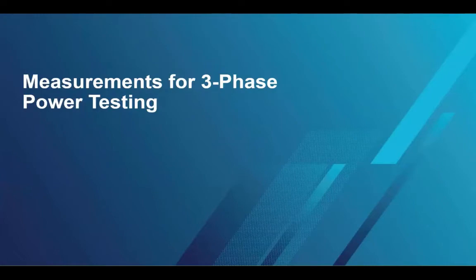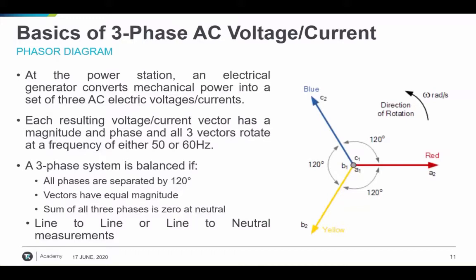Let's look at some measurements for three-phase power testing. At the power station or grid, an electrical generator converts mechanical power into a set of three AC electric voltages or currents. Each resulting voltage or current vector has a magnitude and phase, and all three vectors rotate at a frequency of either 50 or 60 Hz depending on which country you live in. A three-phase system is considered balanced if all phases are separated by 120 degrees, the vectors have equal magnitude, and the sum of all three phases is zero at neutral. As shown in the diagram, the three phases A, B, and C are all separated by 120 degrees.